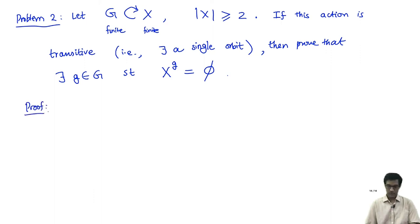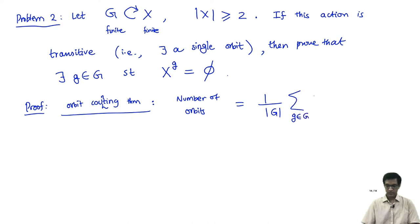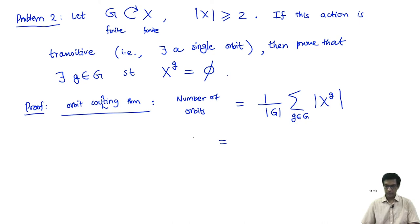To prove this, we will use the orbit counting theorem, which says the number of orbits equals (1/|G|) times the sum over all G in G of the cardinality of the fixed points. Since we have assumed the action is transitive, there is a single orbit, so moving |G| to the other side: |G| equals the sum over all G of |x^G|.